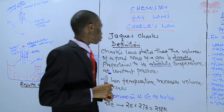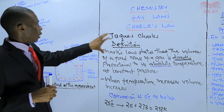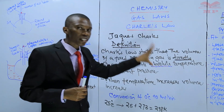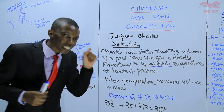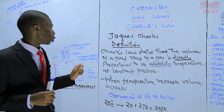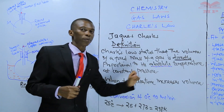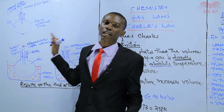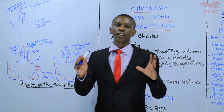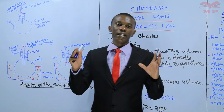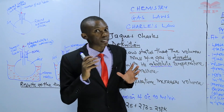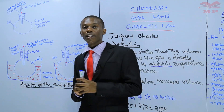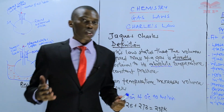Generally, the simple understanding from this experiment is: when temperature increases, volume increases; when temperature decreases, volume decreases. This matches our definition — the volume of a fixed mass of a gas is directly proportional to its absolute temperature at constant pressure. Therefore, this experiment has been done at constant pressure, and what is varying is temperature and volume.